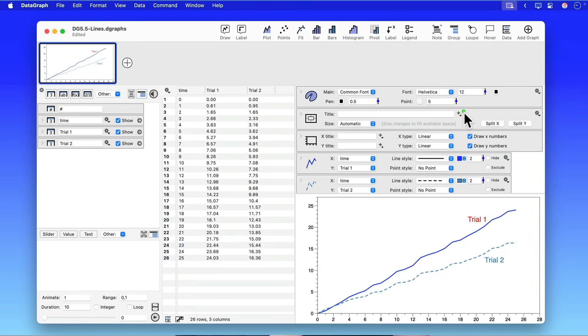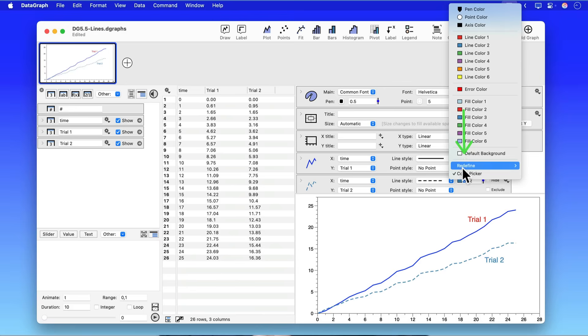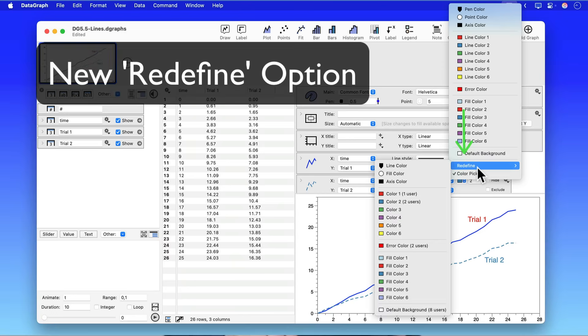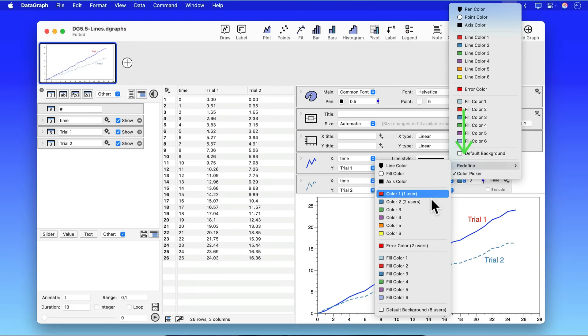So what we've done in the latest version of DataGraph is if you set a custom color within a command, you can go back to the color menu, click it one more time and you'll see a new option that allows you to update the color that's in the style settings.